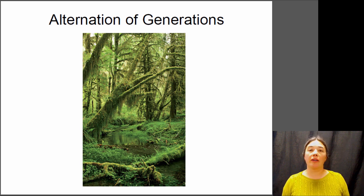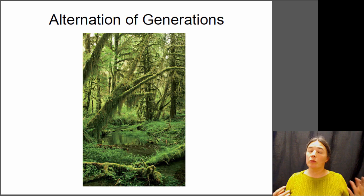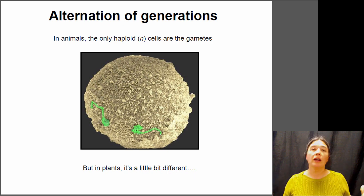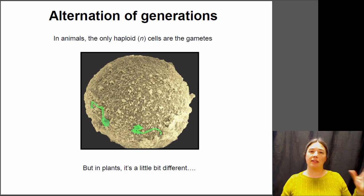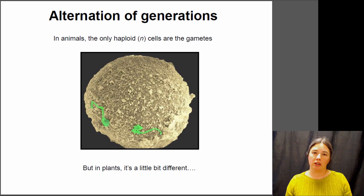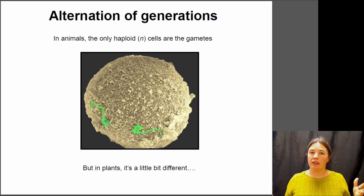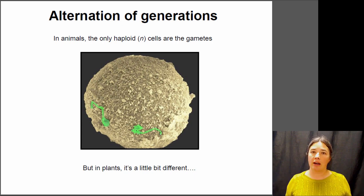Hi, this is Dr. Kloyer and today we're going to be talking about alternation of generations in plants, which is the reproductive cycle of a plant. In animals, animals are diploid and they go through a haploid phase that is very short — just the sperm and the egg — and the sperm and egg come together as haploid structures to form a new diploid individual. The sperm and egg consist of only a single cell, and it's a very brief phase in the reproduction of an animal.